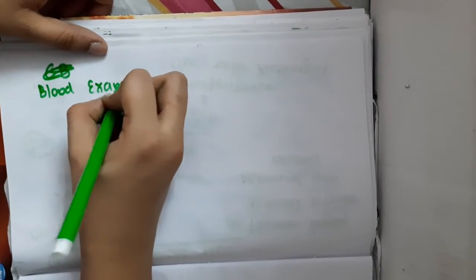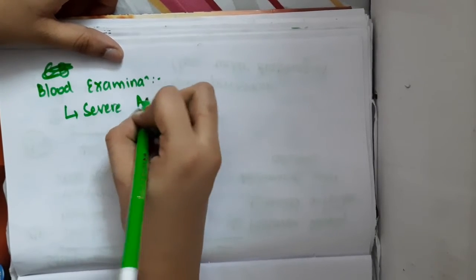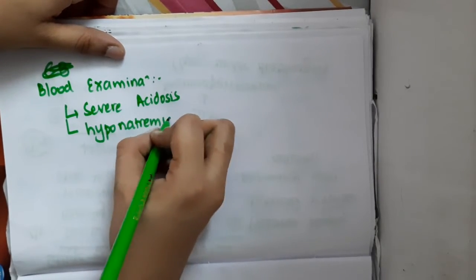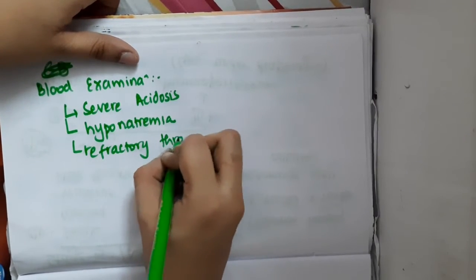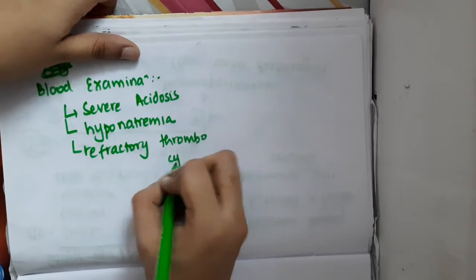On blood examination, ABG shows severe acidosis, electrolytes show hyponatremia, and CBC shows refractory thrombocytopenia.